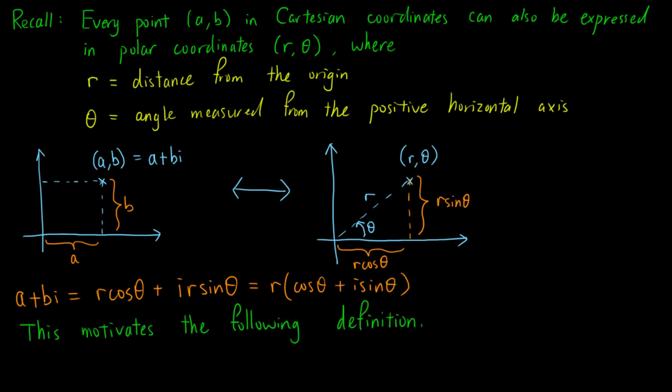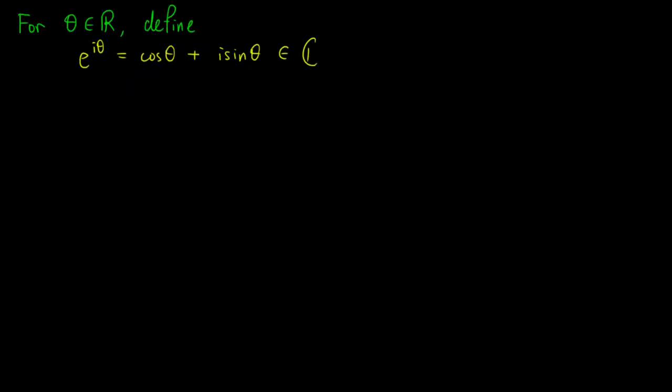This motivates the following definition. For a real number θ, we define e to the iθ as cos θ plus i sin θ, which is a complex number.